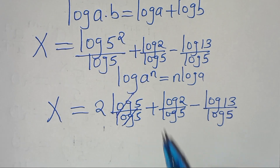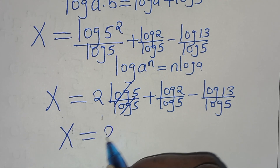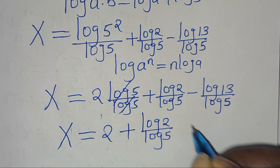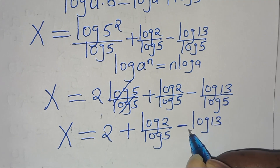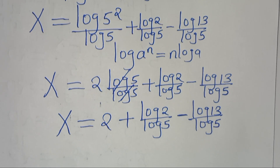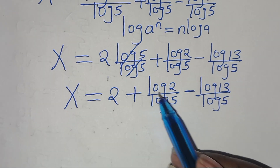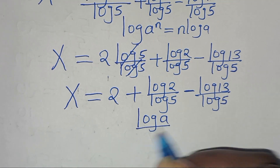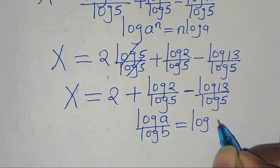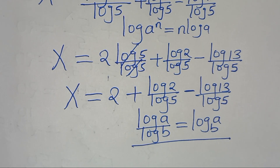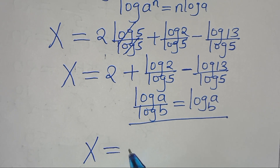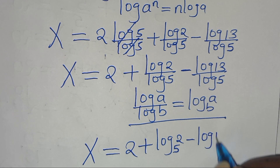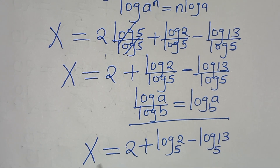Simplifying log 5 over log 5 gives us 2, so x equals 2 plus log 2 over log 5, minus log 13 over log 5. Now log 2 over log 5 and log 13 over log 5 are in the form log(a)/log(b), which equals log base b of a. Applying this logarithm property, x equals 2 plus log base 5 of 2, minus log base 5 of 13.